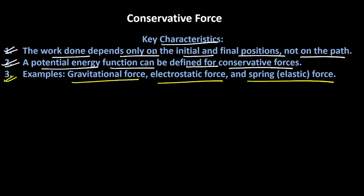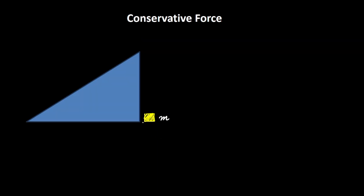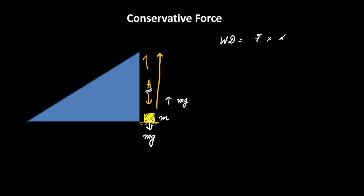Let's prove that the work done depends only on the initial and final position, not on the path. Imagine that I am taking this box with mass M to a height of H. The force acting on this box will be because of the weight of the box, which would be equal to mg. If I have to lift this box, I will have to apply the same force mg to a height of H. So the work done would be equal to force times displacement, which is mg times H.